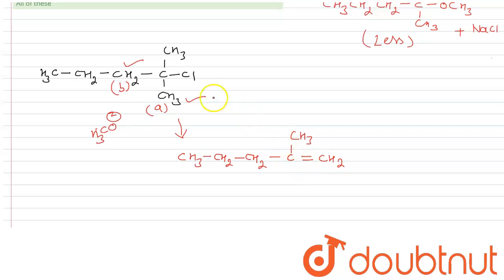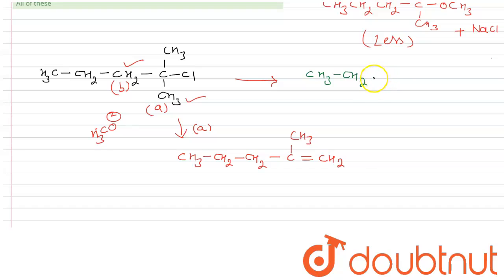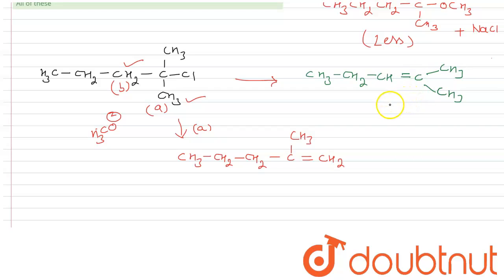If we go through path B, the product will be CH3–CH2–CH=C(CH3)–CH3, which is the more substituted alkene — the Zaitsev product. So both elimination products are formed through this reaction, and both are in higher yield since we are using a strong nucleophile in polar solvent.